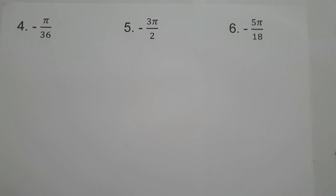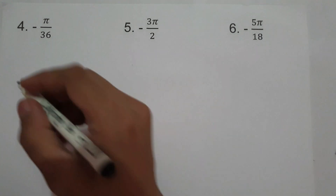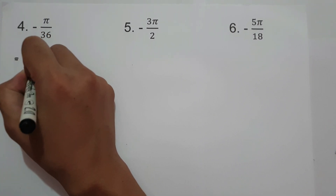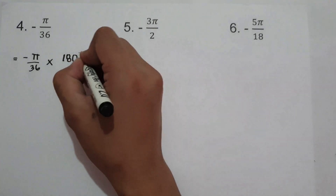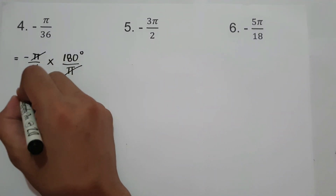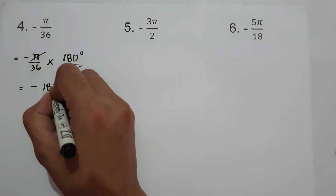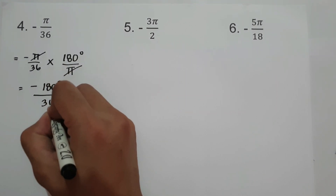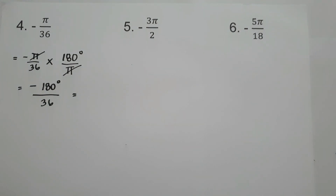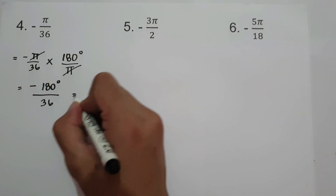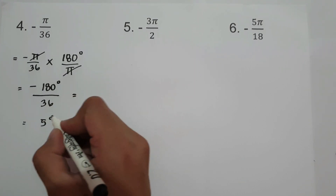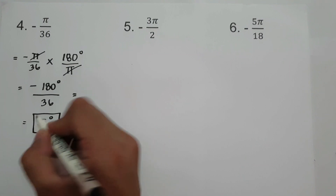On number 4, we have negative pi over 36. Multiply negative pi over 36 by 180 degrees over pi. Cancel pi, giving us negative 180 degrees over 36. Since 180 divided by 36 is 5, the answer is negative 5 degrees.